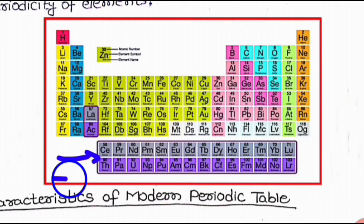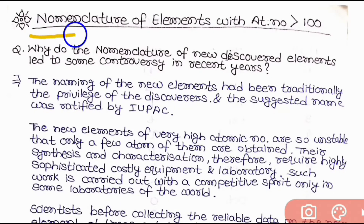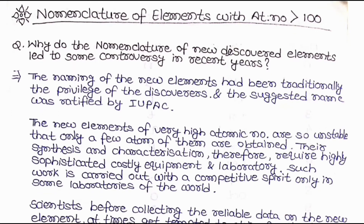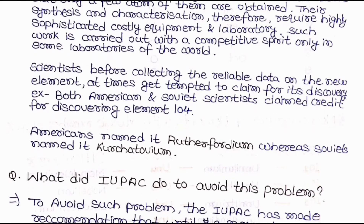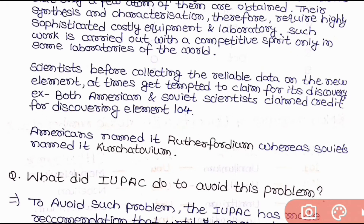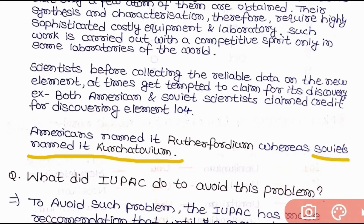Now let us come to the nomenclature of elements with atomic number greater than 100. A question arises: why did the nomenclature of newly discovered elements lead to controversy in recent years? First, scientists, before collecting reliable data on a new element, at times get tempted to claim its discovery. Second, both American and Soviet scientists claimed credit for discovering element 104. The Americans named it Rutherfordium whereas the Soviets named it Kurchatovium.